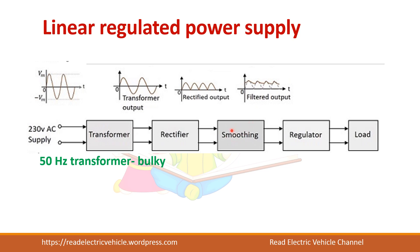If the capacitor size is large, the ripple can be reduced but the cost of the capacitor will increase. If you decrease the capacitor size, ripple will be more, and this output depends upon the load — so as the load changes, this output will also change. So this is basically an unregulated output, and you have to give this output to a regulator to get a regulated output to the load.